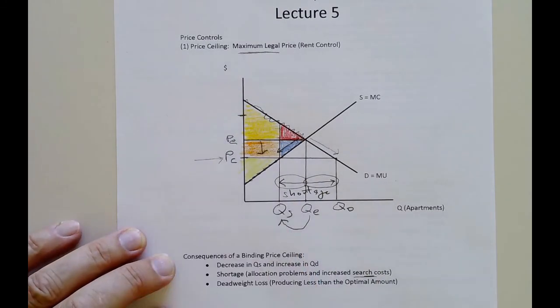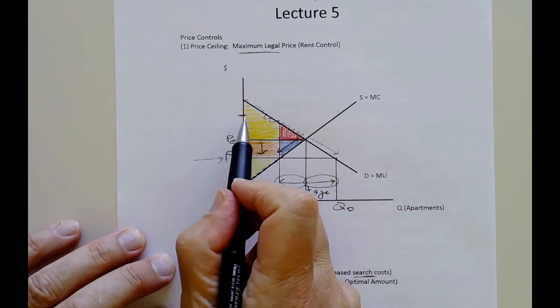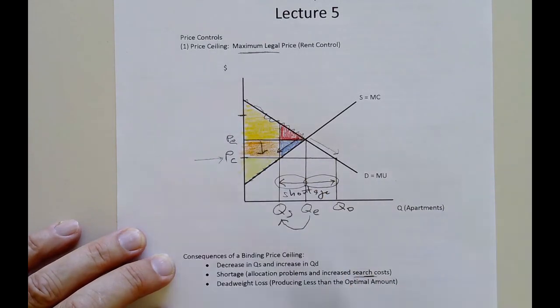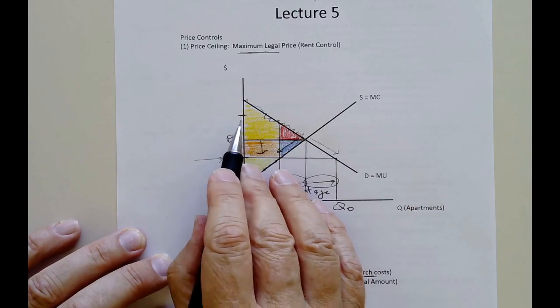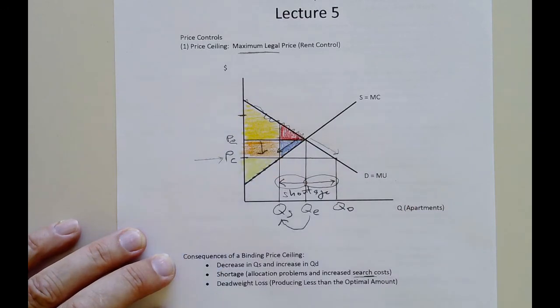So they might have some laws that say the ceiling is above equilibrium right now, just in case something happens. So maybe demand increases a lot, and finally pushes the equilibrium price above the ceiling, then that would have an effect, it would be binding.